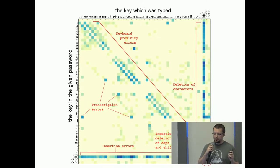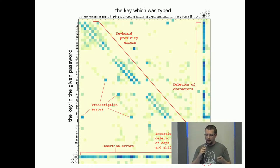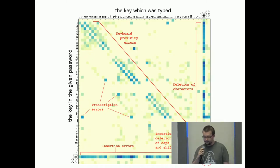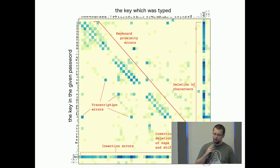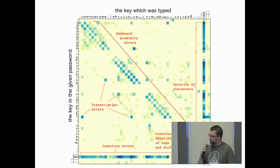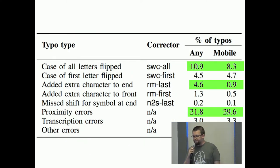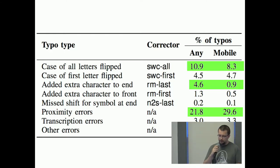There were also errors connected with shift and caps lock, visible in the corner of the histogram. After that they started measuring what kind of typos people were doing and what kind of mistakes they were making, splitting them into a couple of categories.